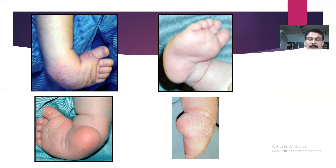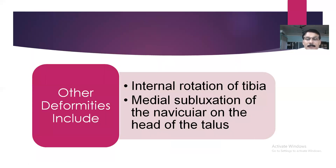These are the four classical components of CTEV. Sometimes additional deformities may be associated, such as internal rotation of the tibia, known as tibial torsion. Sometimes there is subluxation as part of this process, where the navicular and talus joint becomes subluxated, and the talar head becomes more prominent in the anterolateral aspect.